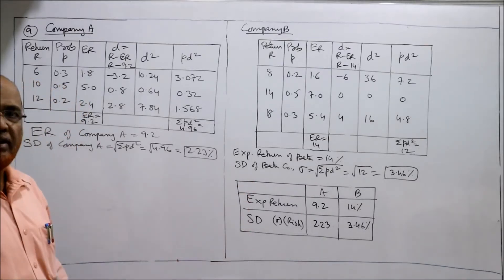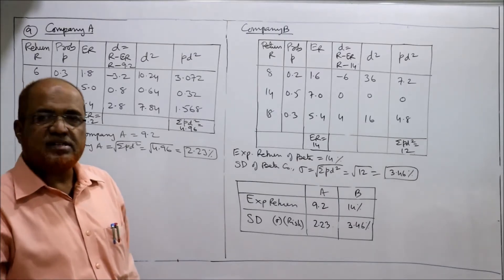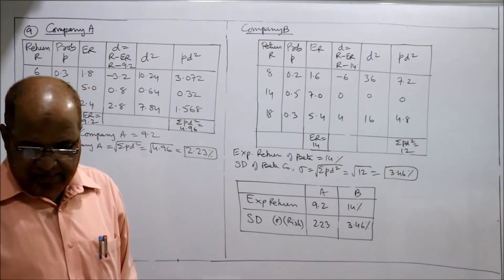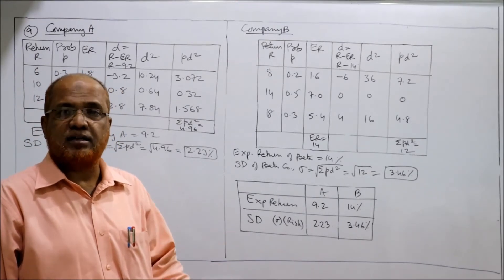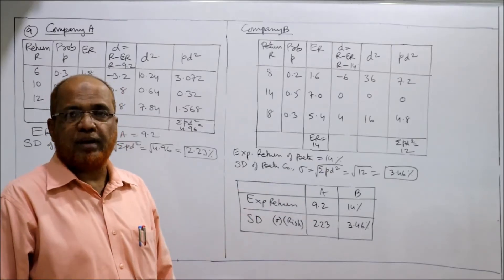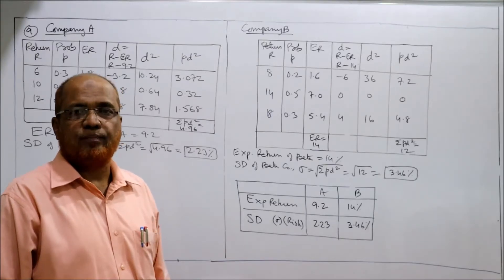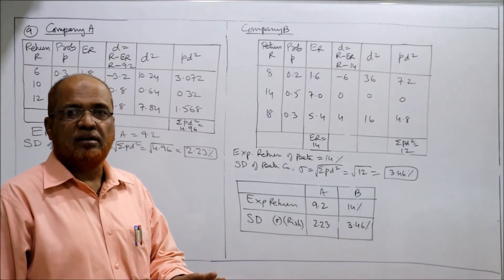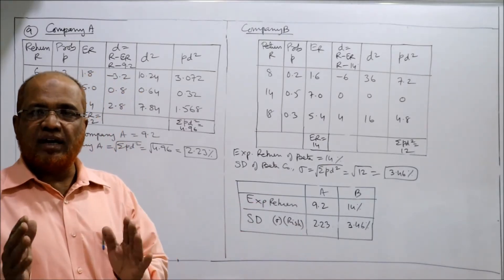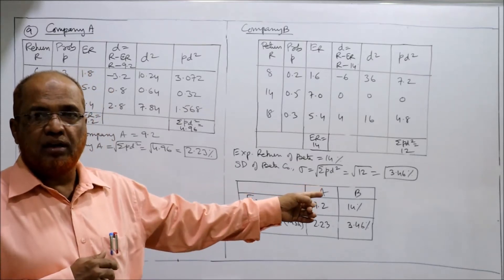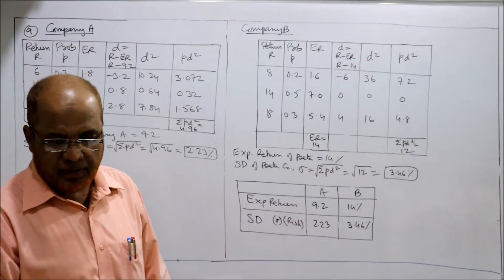Comparing the two: Company B is having more return and more risk; Company A is having less return and less risk. So which company is better? If the investor is a risk-taker — someone who wants higher return and is willing to take risk — then they will prefer Company B. If the investor is risk-averse — doesn't want to take risk and is satisfied with lower return — then they will prefer Company A.